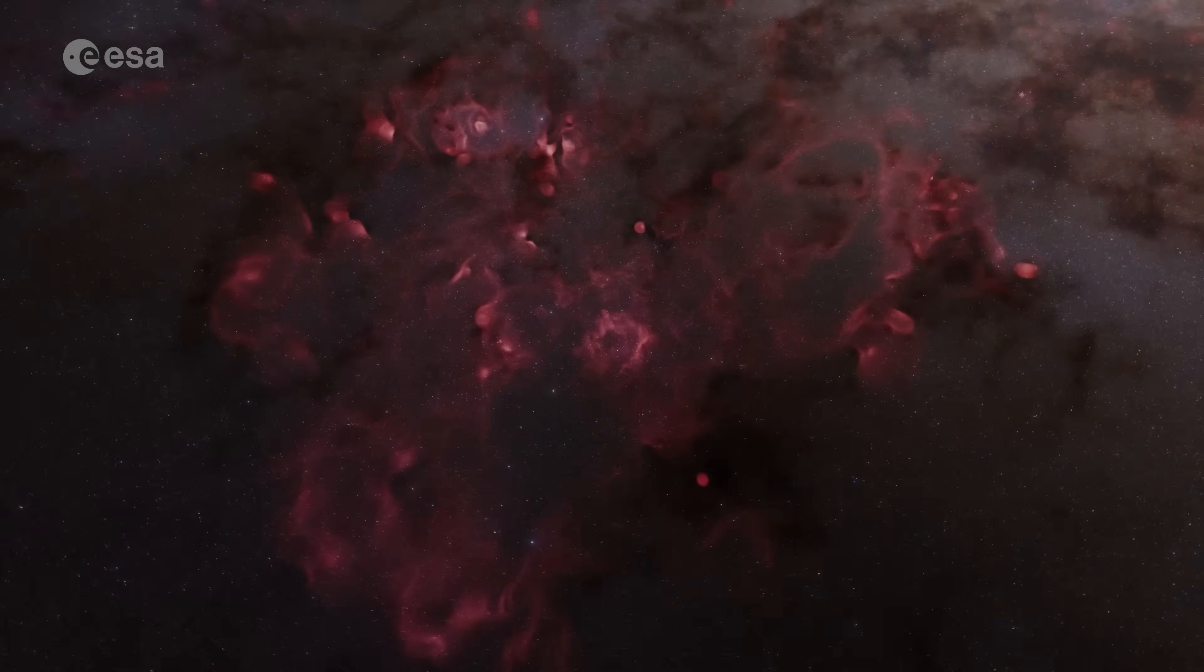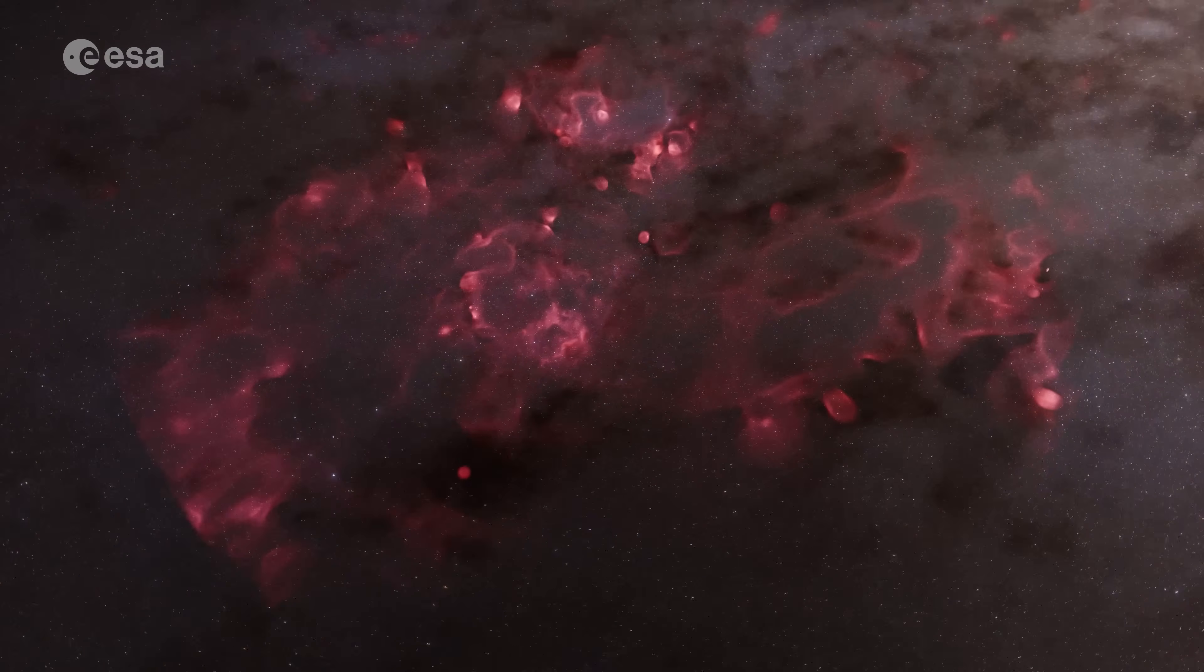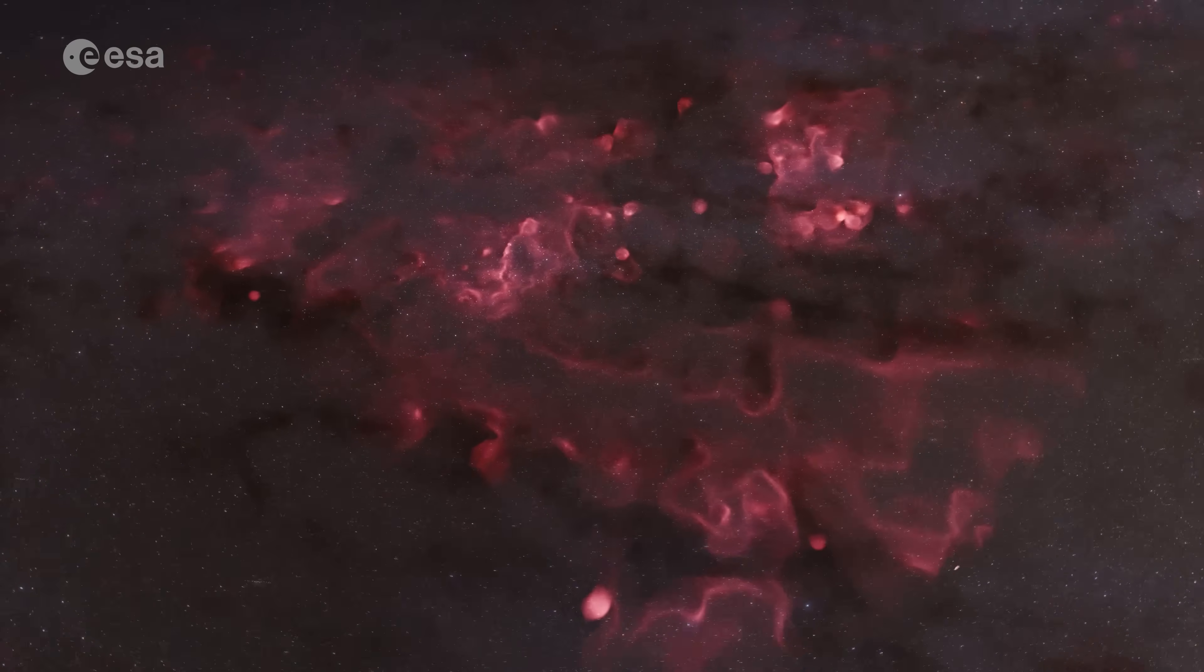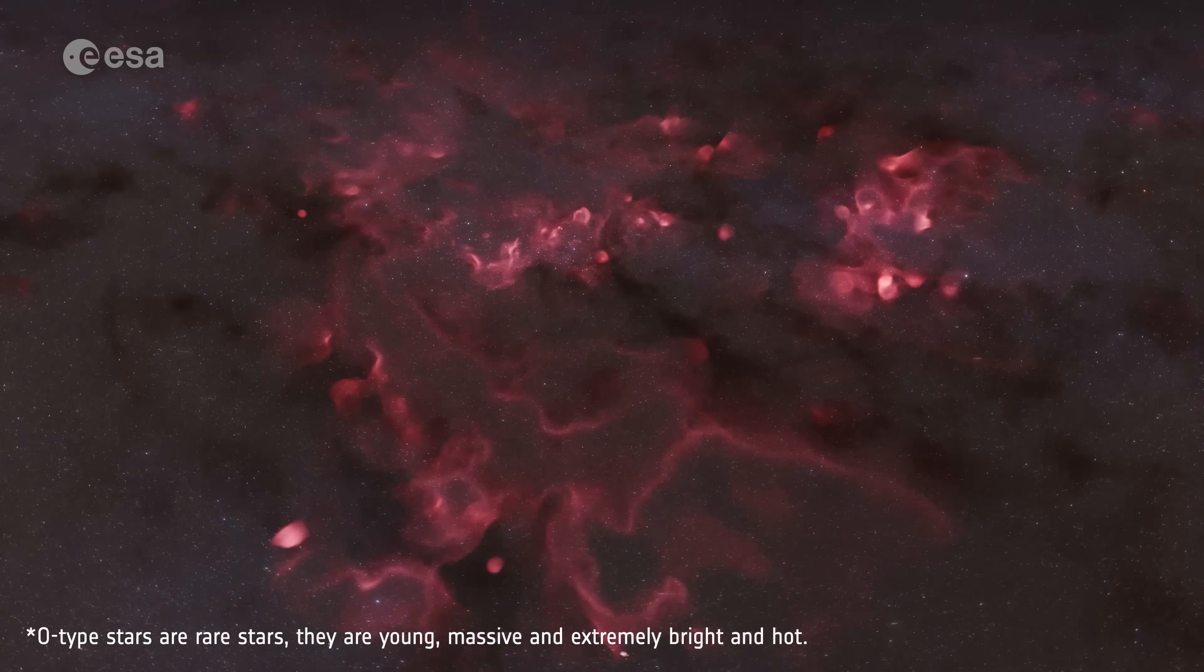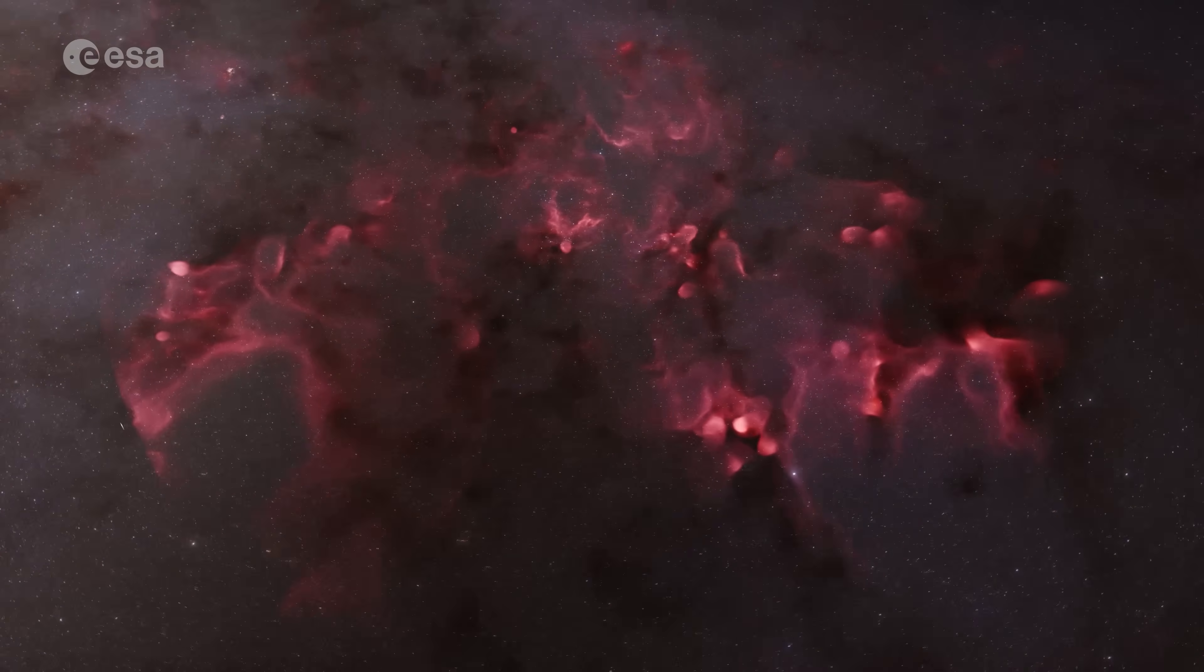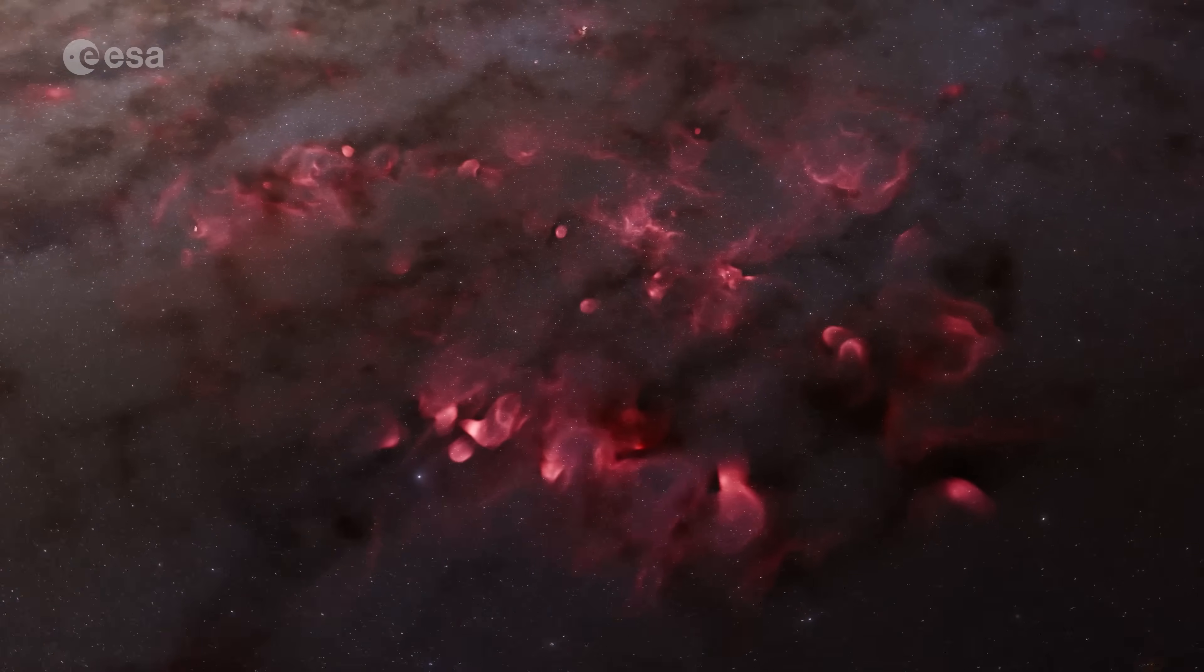This map is based on Gaia's observations of 44 million ordinary stars and 87 O-type stars. These star-forming regions are well studied. Many telescopes have captured stunning images of them.